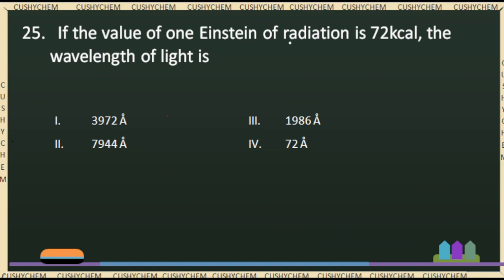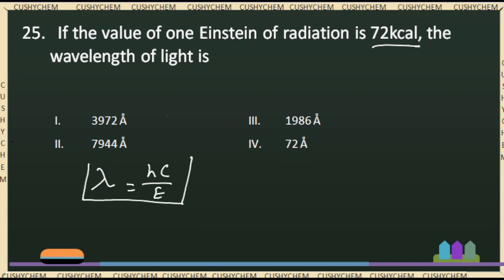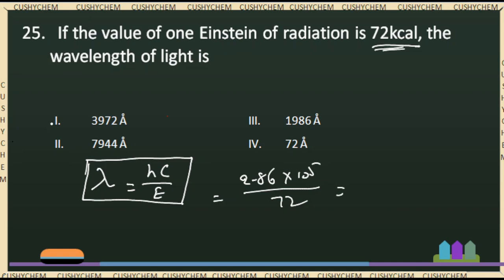If the value of 1 Einstein of radiation is 72 kJ, find the wavelength of the light. The formula to use is lambda equals hc divided by E. We substitute the values into this formula to calculate the wavelength.